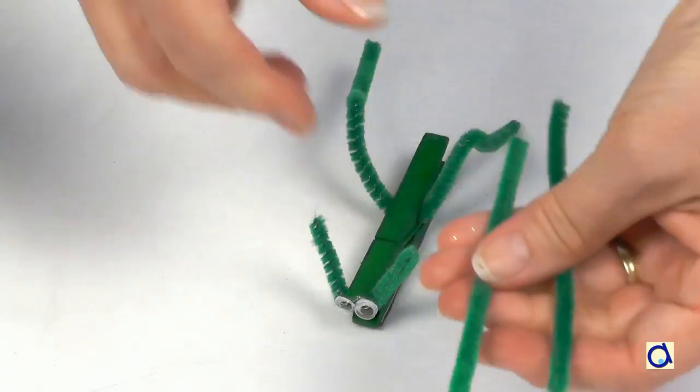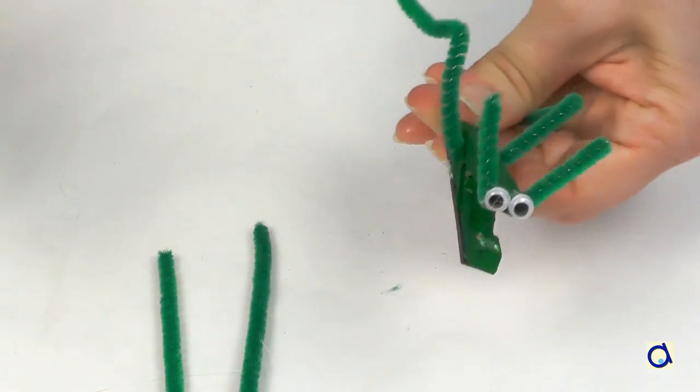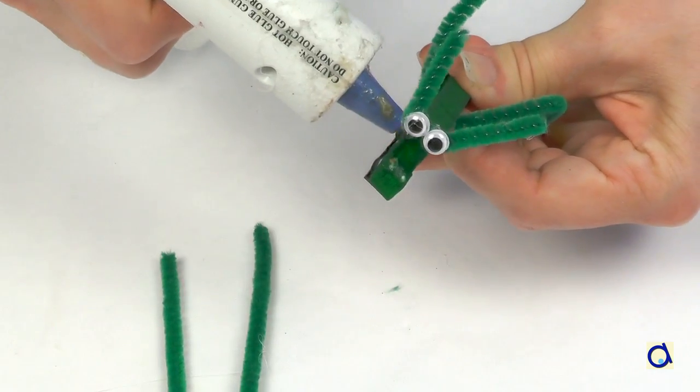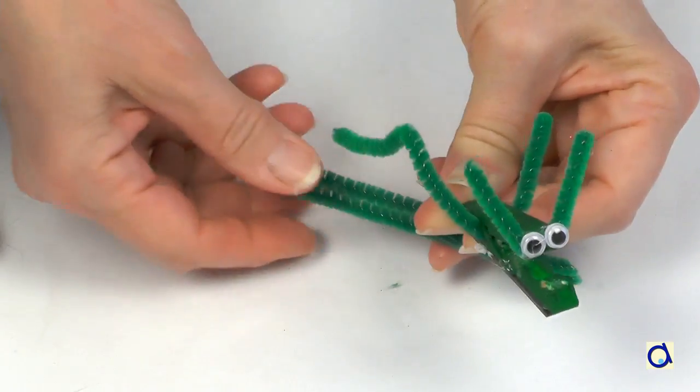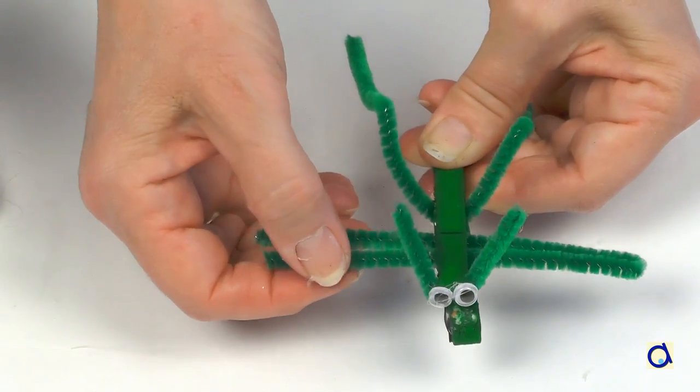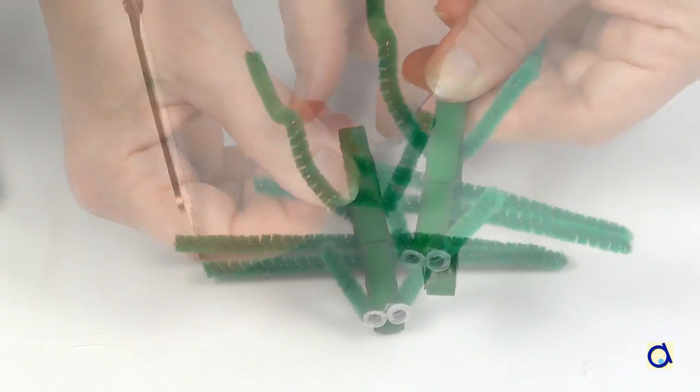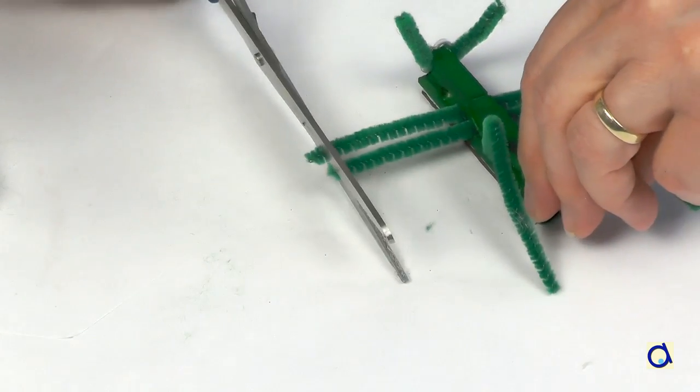Cut two pieces of pipe cleaner to represent the other two pairs of legs. Open the clothespin and put hot glue or white glue in the opening. Slide the two pieces of pipe cleaner in place and center them with respect to the clothespin. If necessary, cut the legs to the right length.